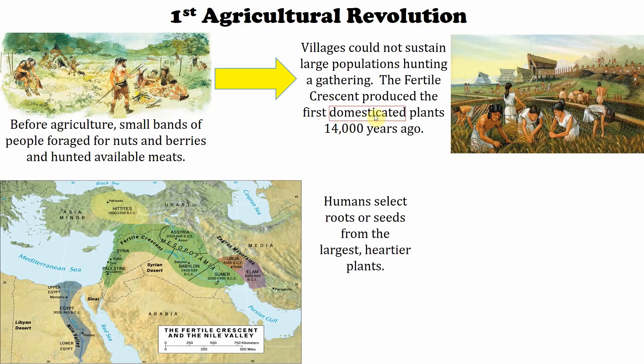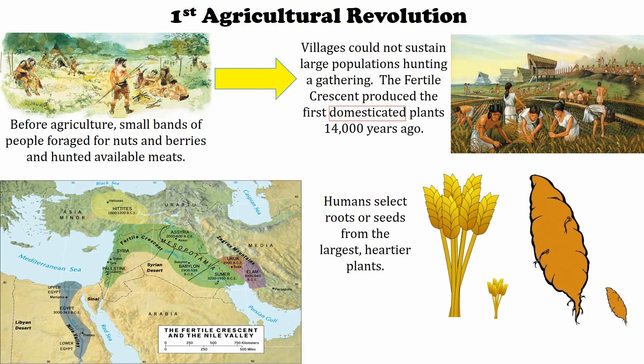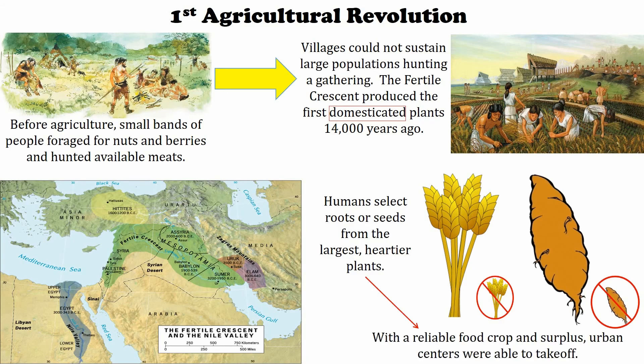They could support larger populations and people could become specialized in their labor. The key word here is 'domesticate' — when humans select traits they like for plants or animals. They started in the Middle East selecting staple crops, root and seed crops. They would grow two crops and select the better one, getting rid of the smaller ones. Over thousands of years, crops became bigger, yielded more, and it allowed urban centers to take off.